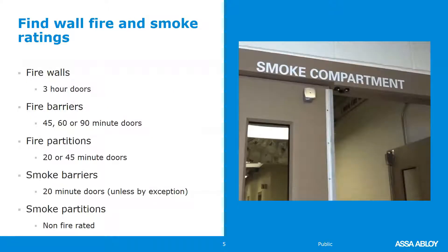Use the life safety plans to find fire walls and smoke ratings. If firewalls — each one of these has a distinct definition in the International Building Code. Firewalls are going to be three-hour doors. Fire barriers will be either 45, 60, or 90-minute doors. If they're part of an exit enclosure, they're going to be 60 or 90-minute. If they are more like a storage room, it would be the 45-minute type. Fire partitions: you'll find either 20 or 45-minute rated doors, depending on the location within the building and what is being protected.